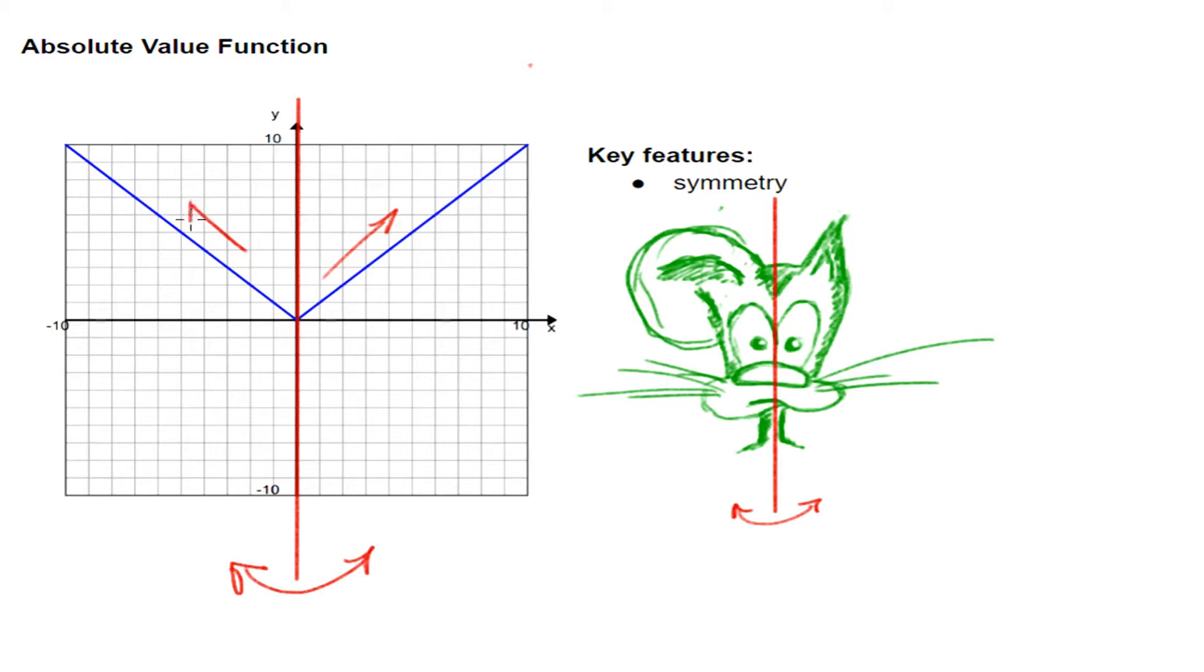If we look at my graph over here, let's ask ourselves the same question. If I cut it down the middle, does it mirror itself? And yes, it does. This is going up here, this is going up here. If I travel 1, 2, 3 over, I'm up 3. If I travel 1, 2, 3 over, I'm up 3. So, this is perfectly symmetric. It is symmetric over the vertex.